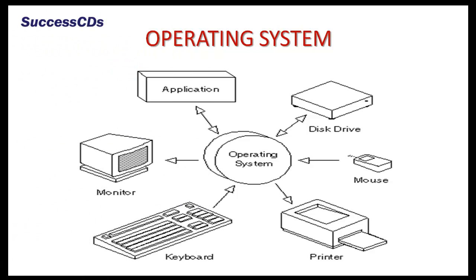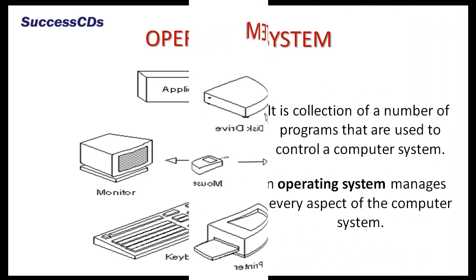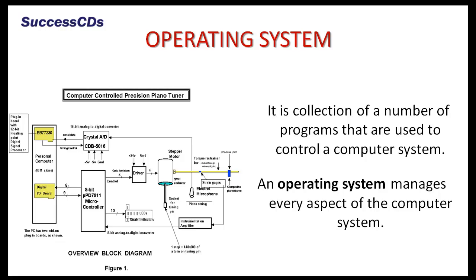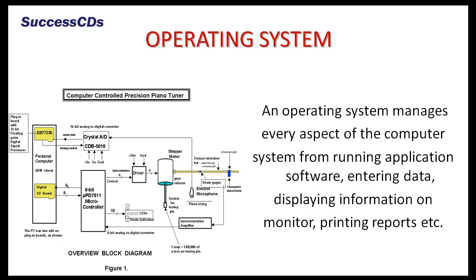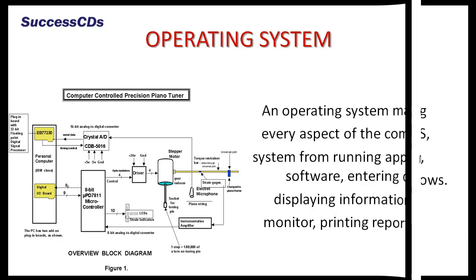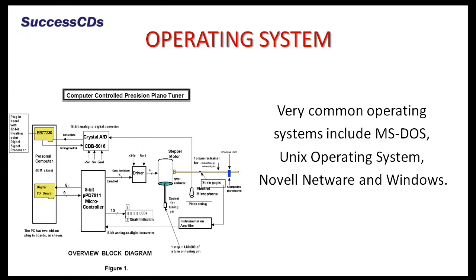Now we are going to talk about operating system. An operating system is a collection of a number of programs that are used to control a computer system. An operating system manages every aspect of the computer system, from running application software, entering data, displaying information on a monitor, printing reports, etc. Very common operating systems include MS-DOS, Unix, Novel Netware, and Windows.